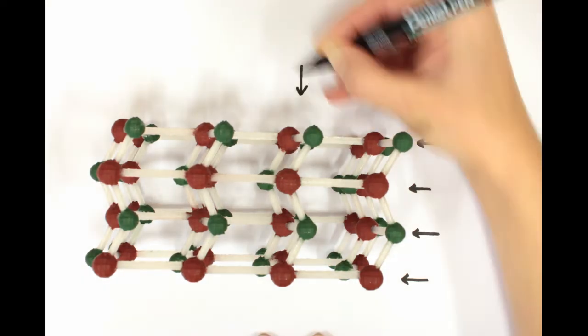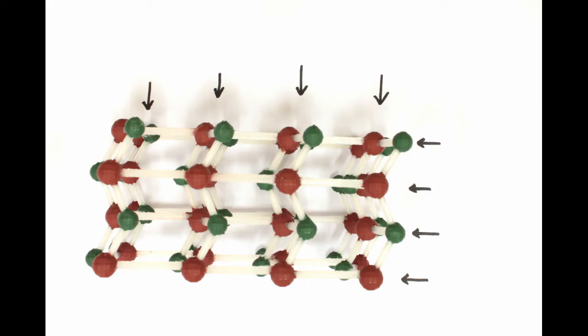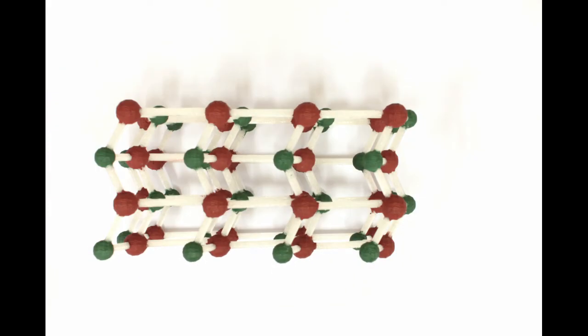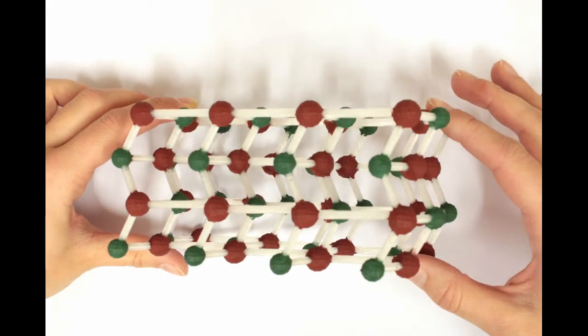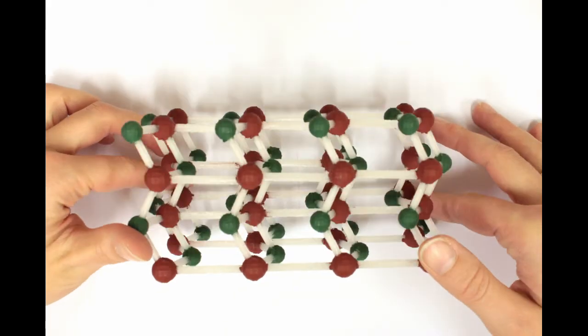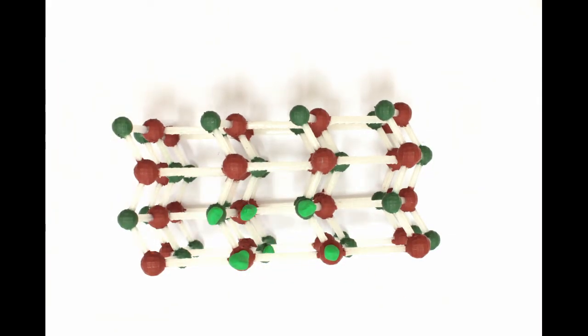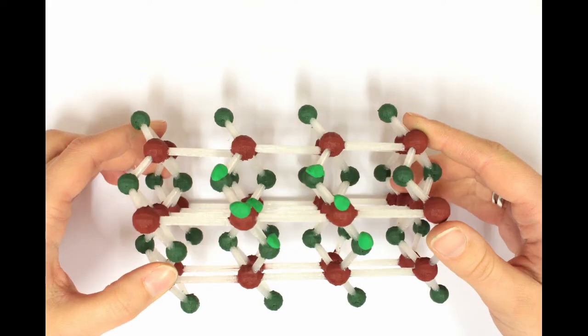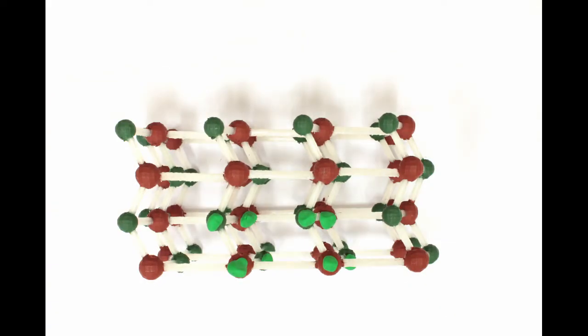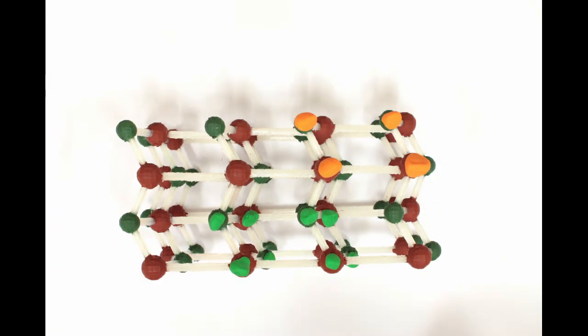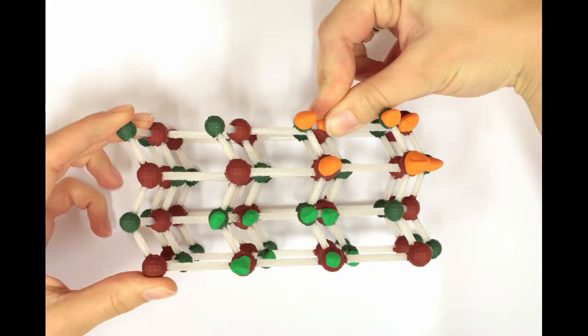In fact, there is one set of atoms that repeats everywhere throughout the structure. This is known as the unit cell of the crystal, and the structure of the whole crystal can be made by repeating this unit cell in all directions. Here is the unit cell of iron selenide marked in green. You can see it's exactly the same as the unit cell marked here in orange.